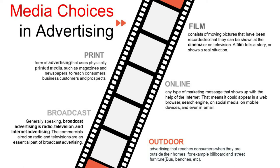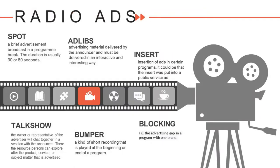Third is outdoor advertising — when you go outside and see billboards or street furniture showing a product, that is called outdoor advertising. It reaches consumers when they are outside. The fourth is print advertising, which uses physically printed media such as magazines and newspapers to reach more consumers. The last one is broadcast — commercials aired on radio, television, or internet. Broadcast is sometimes more expensive.